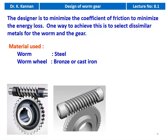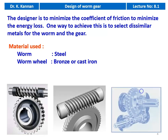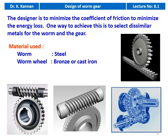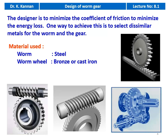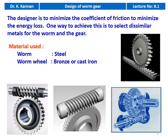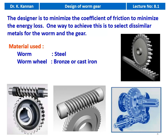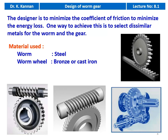The worm is always the driving unit and the worm wheel is the driven unit. This is analogous to the rack and pinion mechanism, where we can find rolling and sliding action. In the worm gear drive also, we have rolling and sliding action.